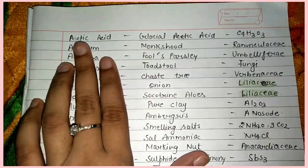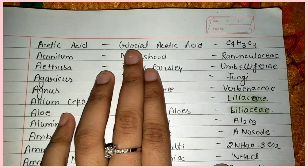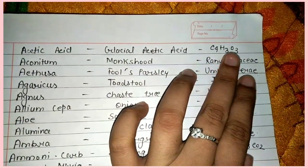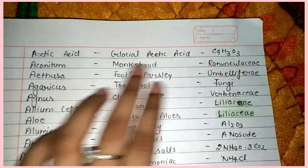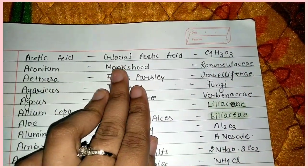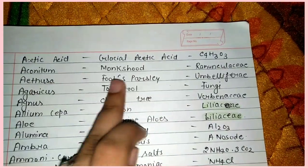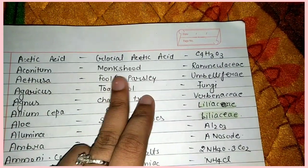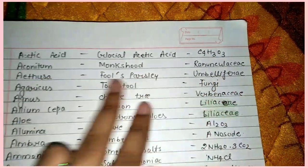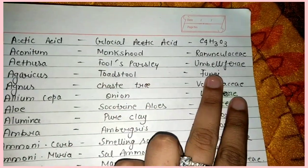First of all, Acetic Acid — its common name is Glacial Acetic Acid, formula C4H3O3. Aconitum — common name Monkshood, family Ranunculaceae. Ethusa — Fool's Parsley, family Umbelliferae. Agaricus — Toadstool, which belongs to Fungi.